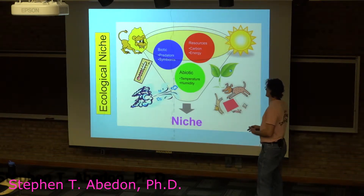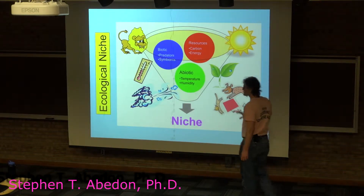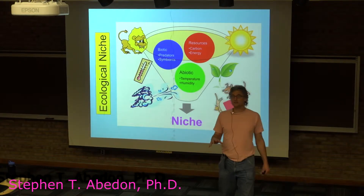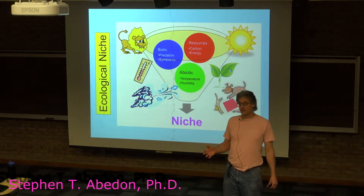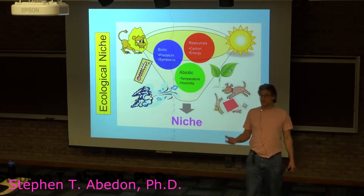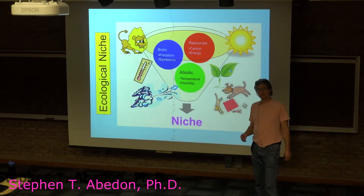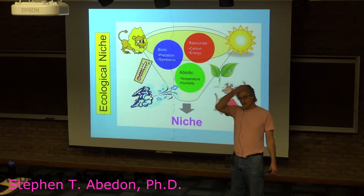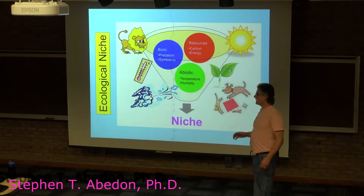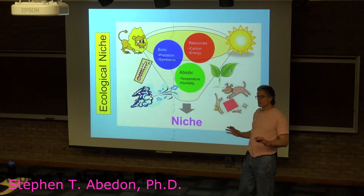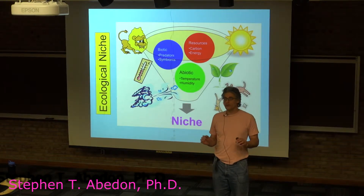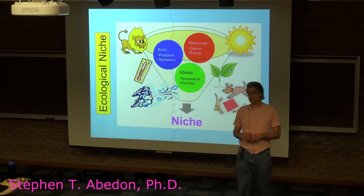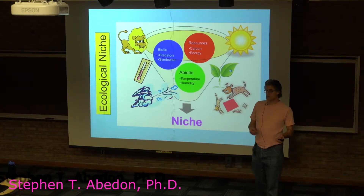A niche is basically a description of everything that an organism needs, that they can exploit, and that they have to be resistant to in order to survive, exist, and thrive within the environment. A niche can be broader than you'll usually see an organism exploiting because of things like interspecific competition.